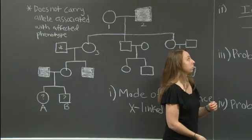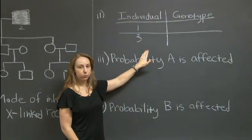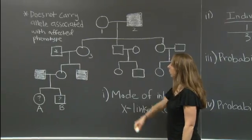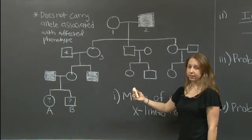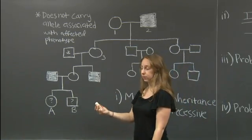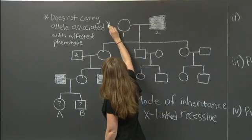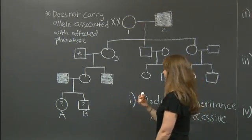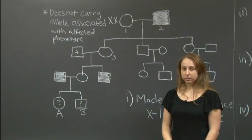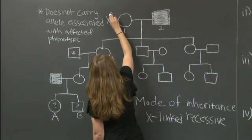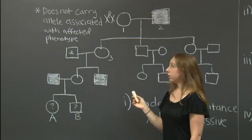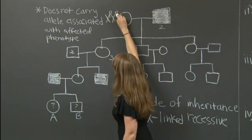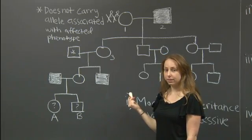Moving on to the second part of this problem, we are asked to determine the genotypes of individuals number one and number three. If we look at this pedigree, we know individual one is female and not affected by the disease. Female individuals contain two X chromosomes, and since she is not affected, she must contain at least one large R. We'll call the allele associated with the disease small r. We do not yet know what her second X chromosome could be — it could be either another large R or a small r, and she still would not be affected.